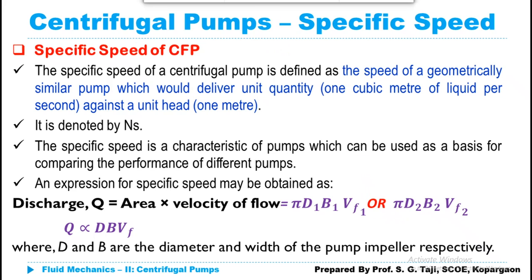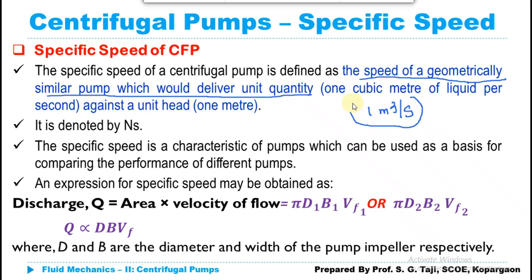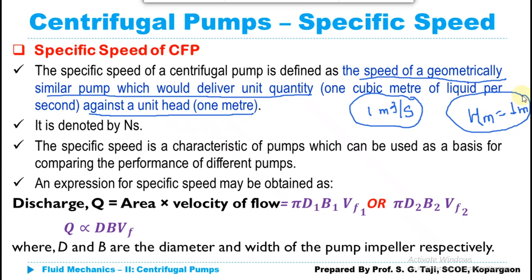Similar to our previous definition, specific speed is the speed of a geometrically similar centrifugal pump which would deliver unit quantity of liquid — that is, one cubic meter per second — when it is working against unit head, that is, when the manometric head is one meter. So when my manometric head is one meter and my discharge is one cubic meter per second, whatever the speed of the pump is, that is known as the specific speed of that centrifugal pump.